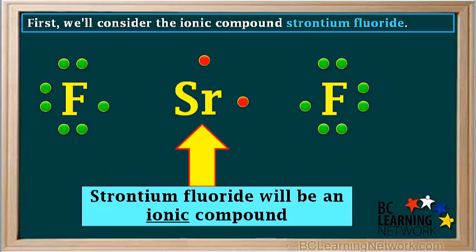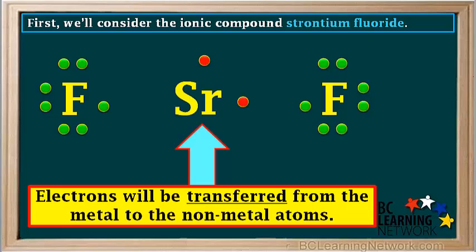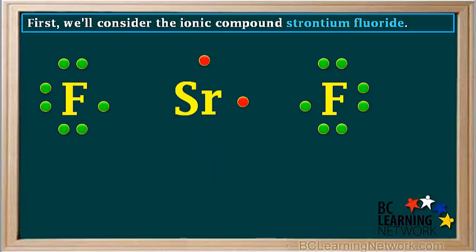Now because strontium is a metal and fluorine is a non-metal, strontium fluoride will be an ionic compound. In an ionic compound, electrons are transferred from the metal to the non-metal atoms. They are not shared. So let's see what happens. Strontium's two valence electrons, shown here in red, have been transferred to the fluorine atoms.